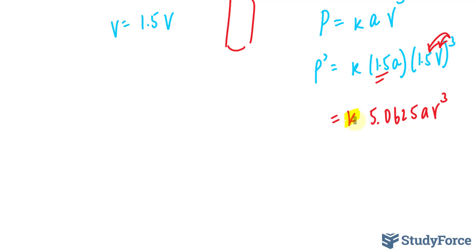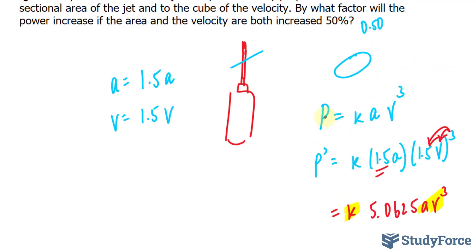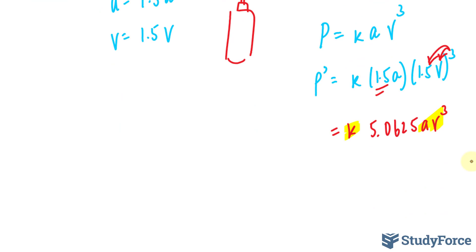And notice that K, A, and V to the power of 3 multiplied together is the original P value. So by increasing the area and velocity by 1.5 of their original, the change in P is nearly 5.1 (I've rounded this up) the original P value. And there you have it.